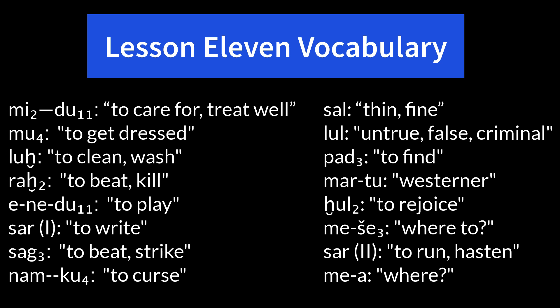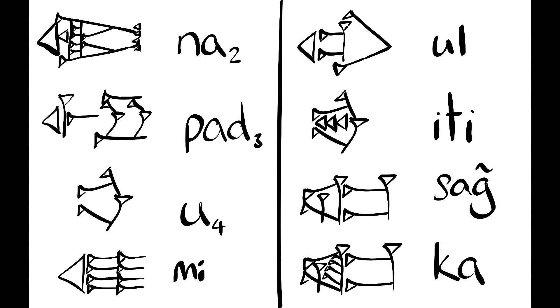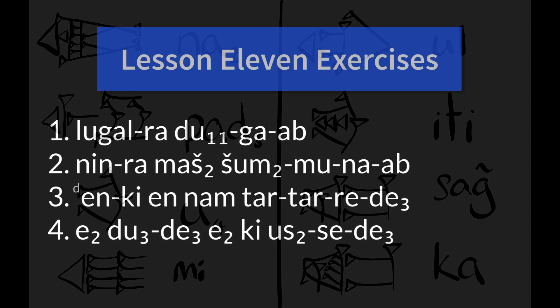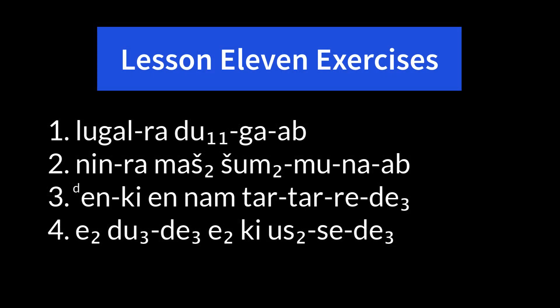Pad₃, 'to find'; martu, 'westerner'; ḫul₂, 'to rejoice'; me-šar₃, 'where'; du, šar meaning two, 'to run or to hasten'; and finally, me-a, 'where.' The signs for lesson 11: na₂, pad₃, u₄, me, al, iti, saĝ, and ka. And finally, the exercises for lesson 11.